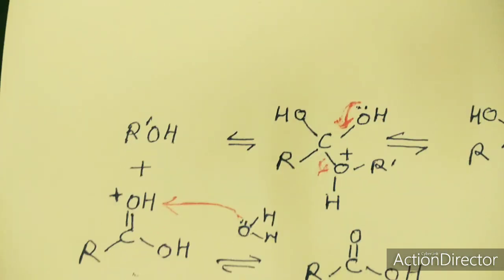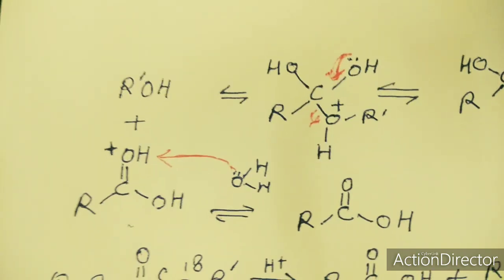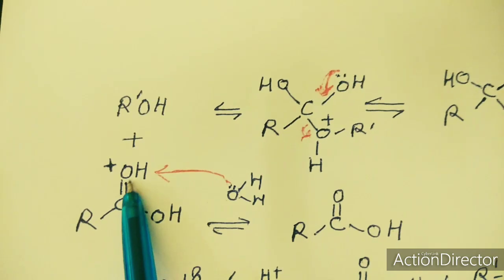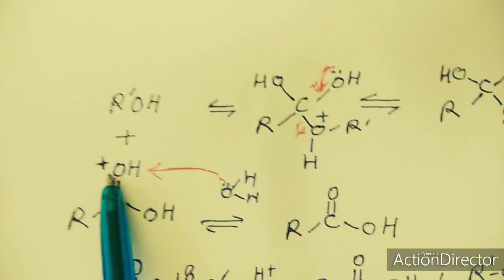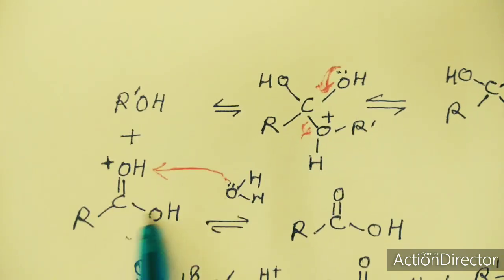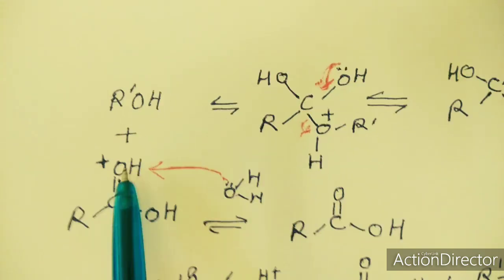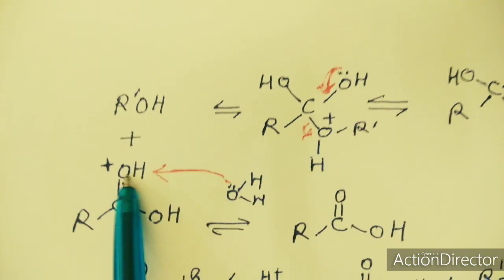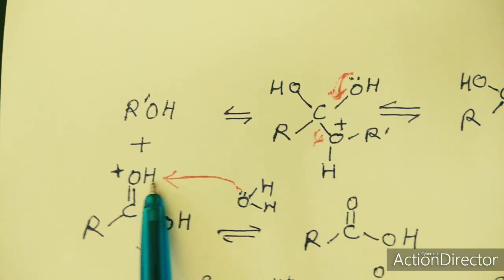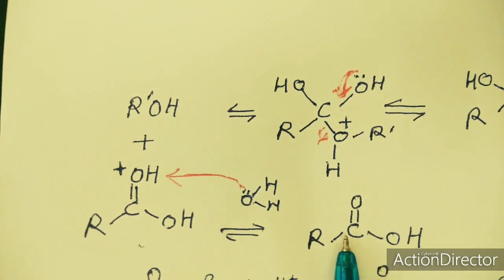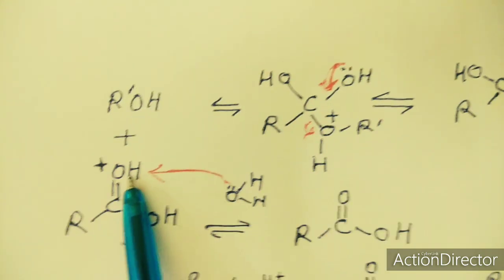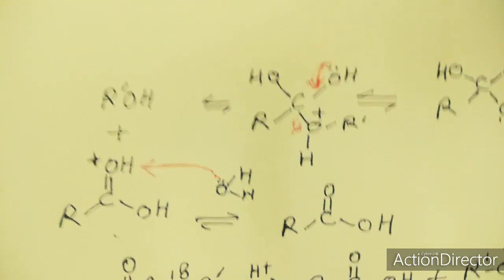Once the alcohol has been formed, the carbon stabilizes itself by means of the lone pair present on the remaining OH, forming a double bond and causing that oxygen to get a positive charge. This is the protonated acid. In the last step, because oxygen positive is pulling electrons from the hydrogen, that bond becomes weak, and a lone pair on water pulls the H+ away.